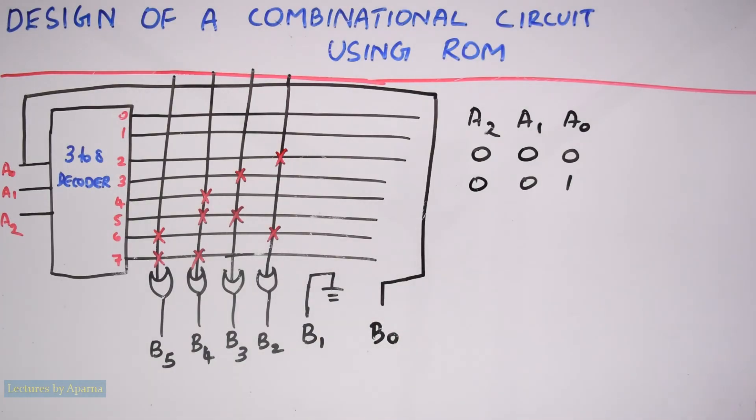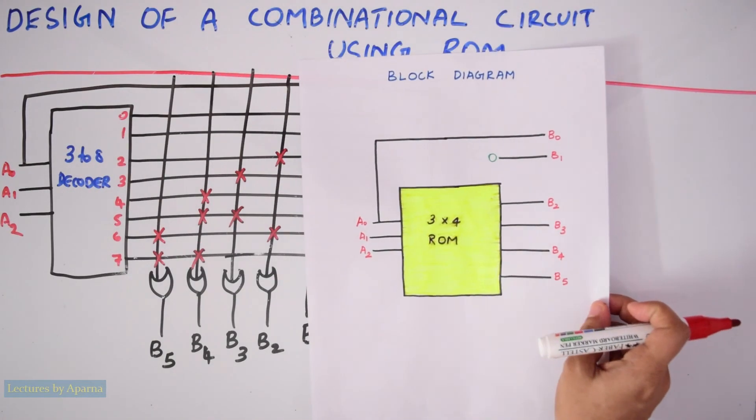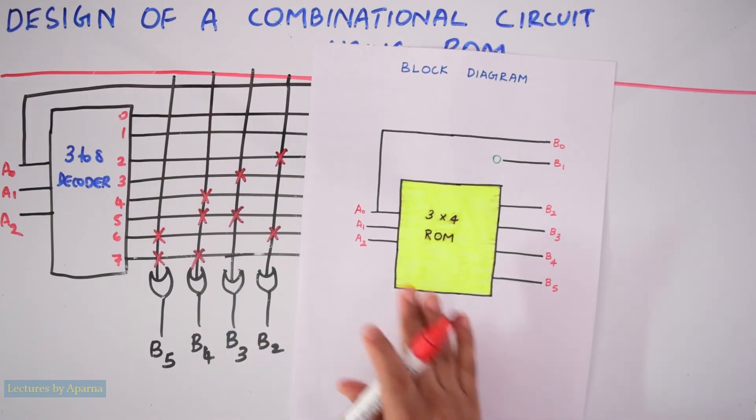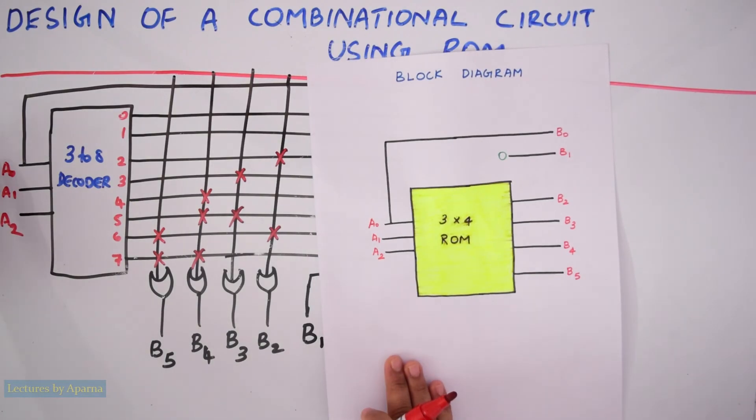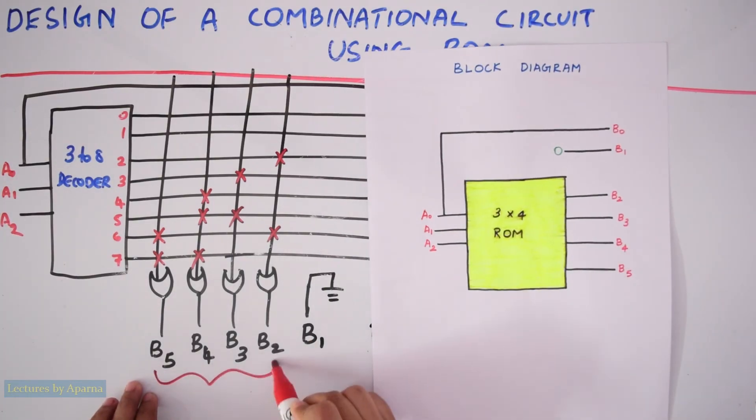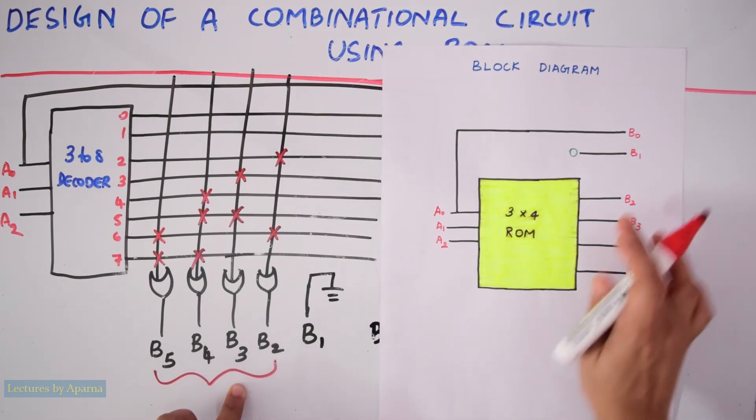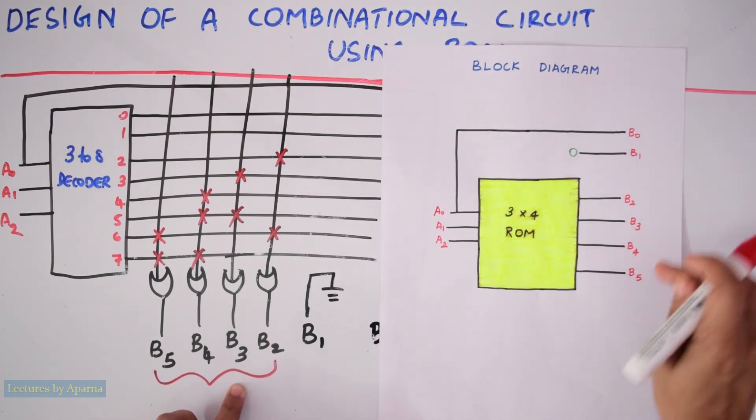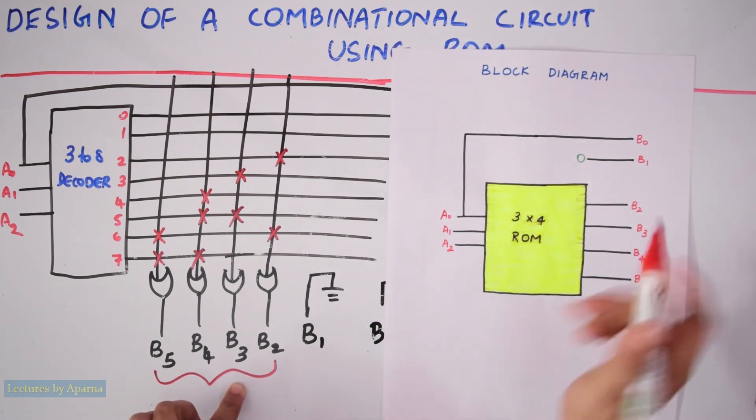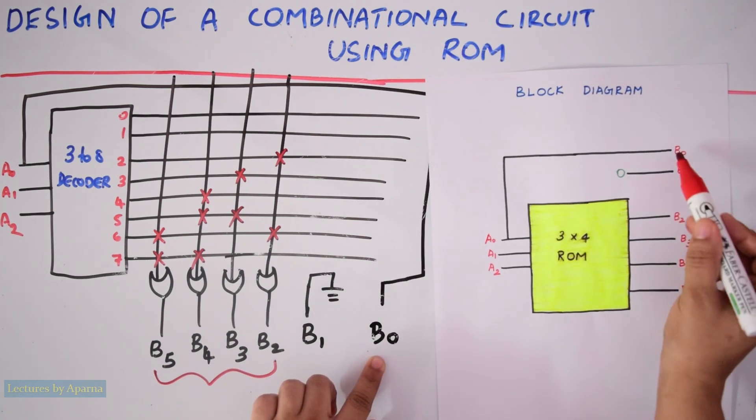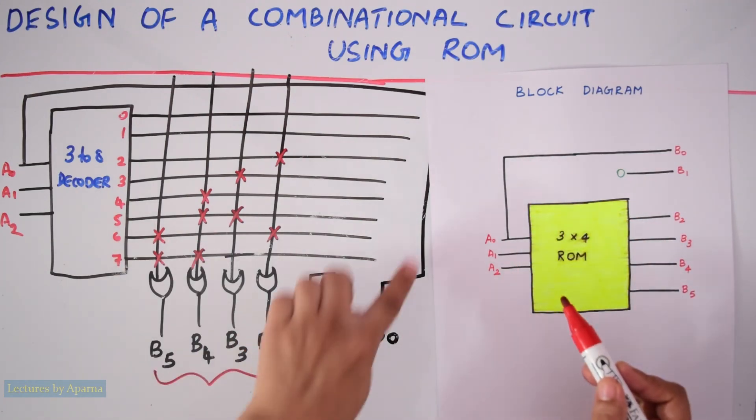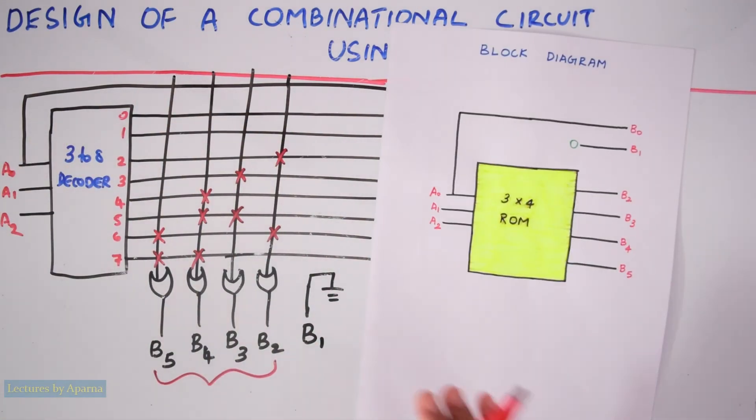So we got the internal logic diagram of the ROM for this circuit. Now if you draw it as a block diagram, it will be like this. 3 inputs and 4 outputs of the ROM. These are the 3 inputs and these are the 4 outputs from the ROM, from B2 to B5. For B1, a 0 is connected and B0 is connected to A0. So this is the block diagram form of this circuit.